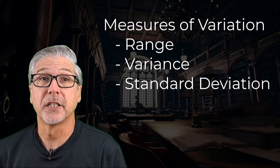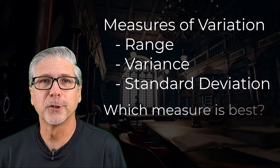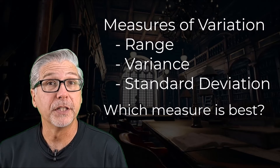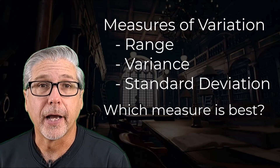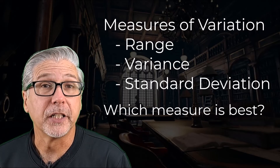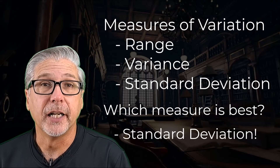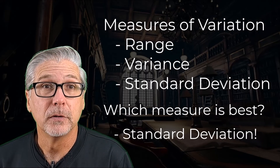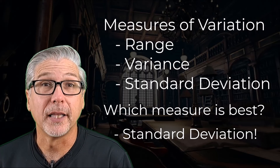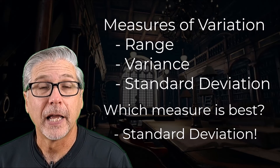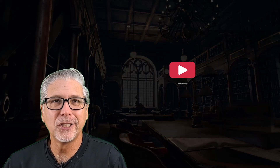So which measure is best? For measures of center, the answer was it depends on the shape of the distribution — I'll provide a link in the description if you want to check that out. For variation, it's a lot simpler: the standard deviation is considered the best measure of variation. Why? Because it's interpretable — we can get useful information from interpreting the standard deviation. How? By watching my video on interpreting the standard deviation.